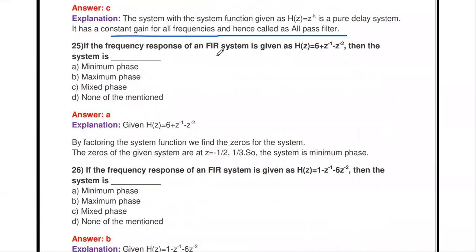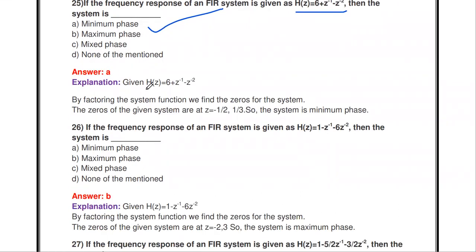If the frequency response of an FIR system is H(Z) = 6 + Z^(-1) - Z^(-2), the system is minimum phase. To determine this, factorize the numerator polynomial to find the zeros: the roots are -1/2 and +1/3, both having magnitude less than one, so the system is minimum phase.